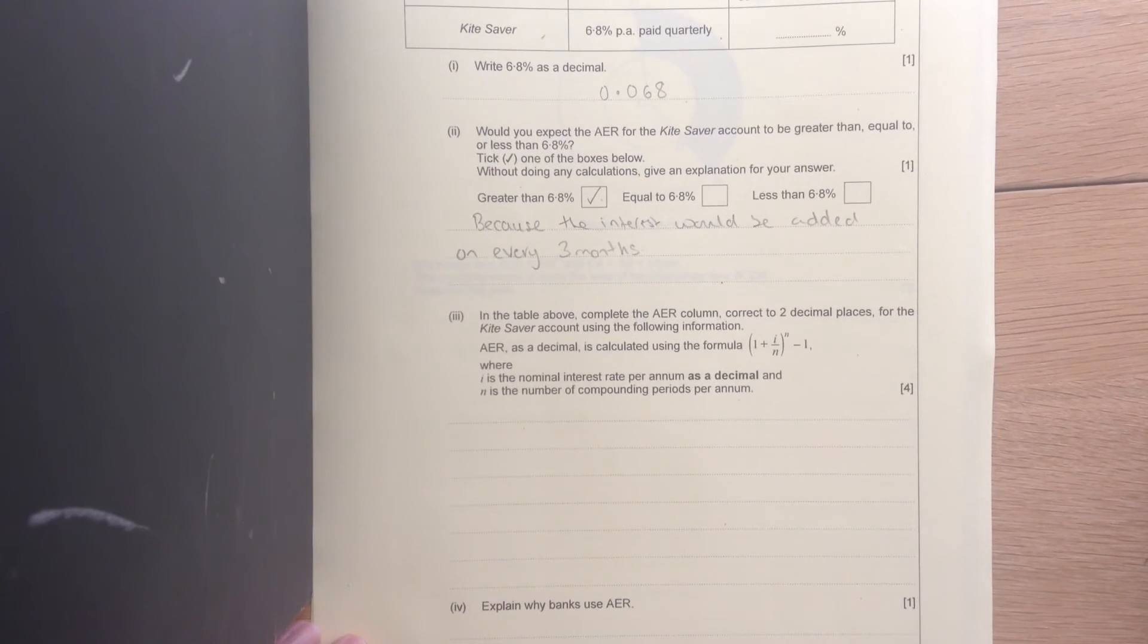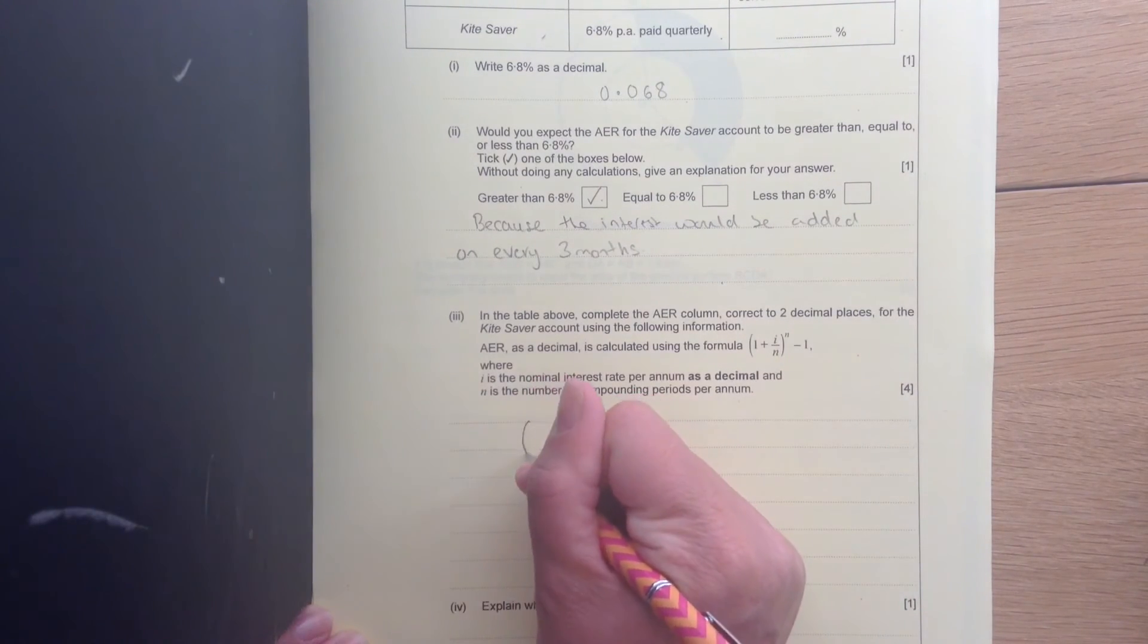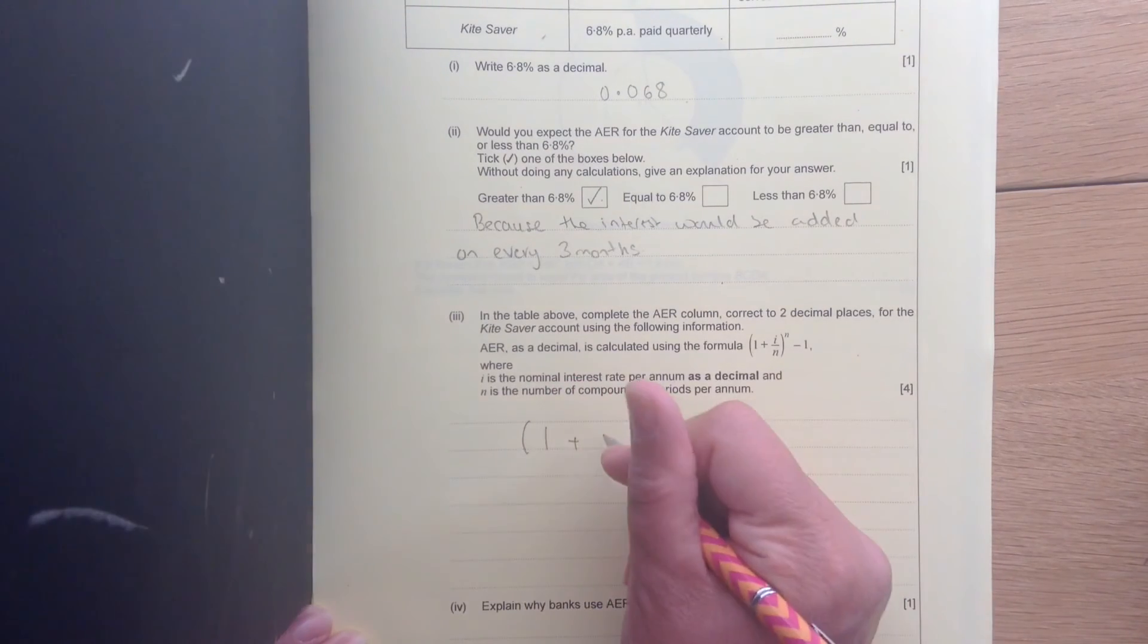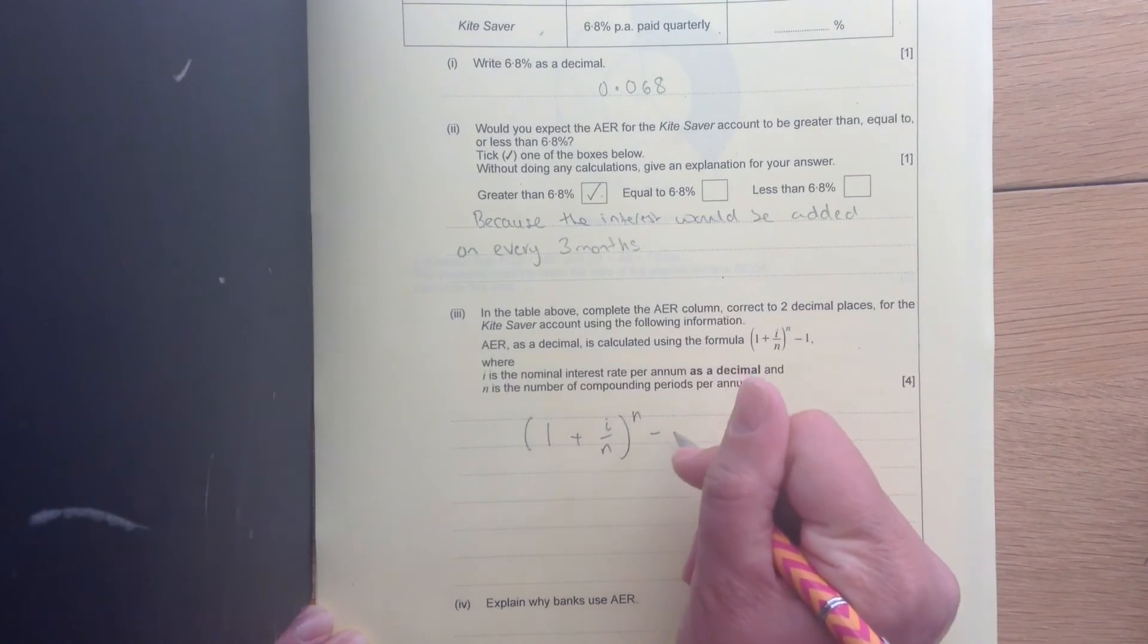In the table above, complete the AER column correct to two decimal places for the kite saver account. And they've given us the formula. This formula is also on the front of the paper. So here's our formula then: 1 plus i over n to the power n, take away 1.